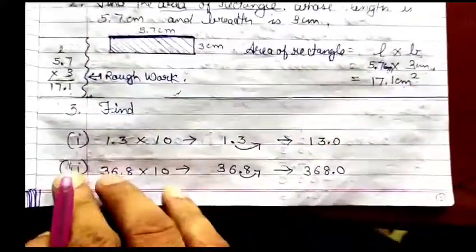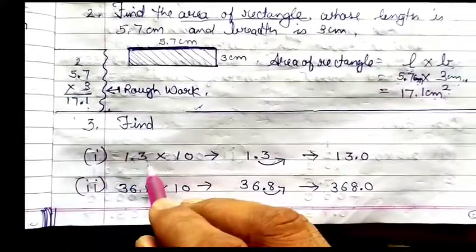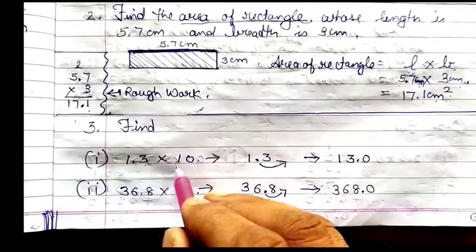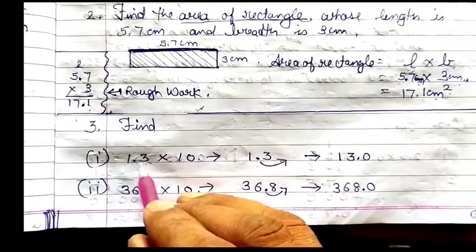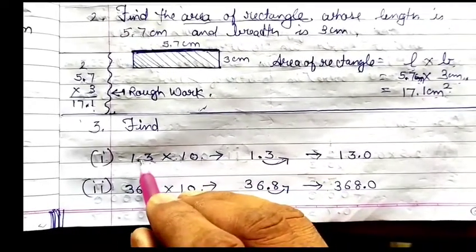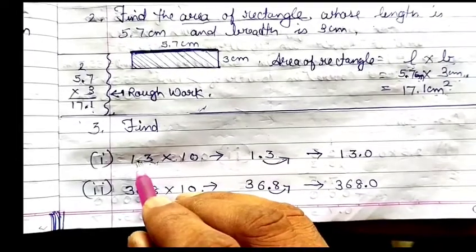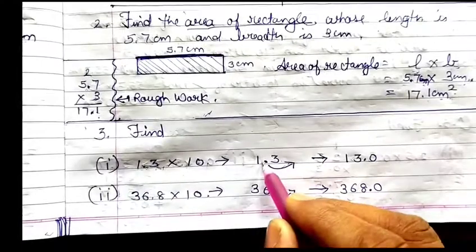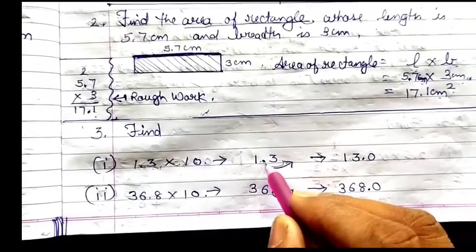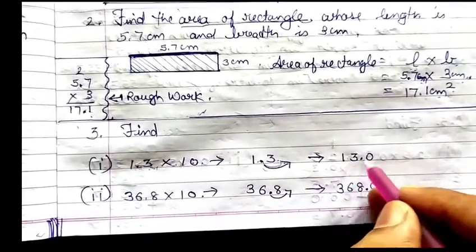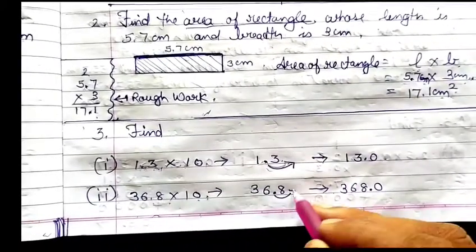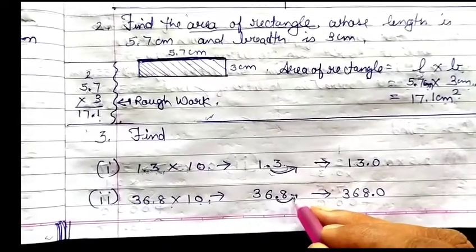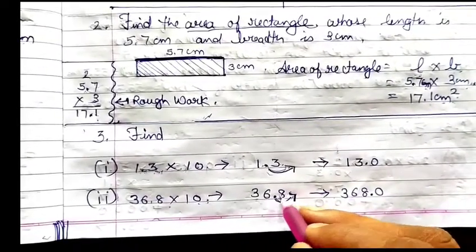Question number 3: everywhere we multiply by 10. While multiplying by 10, move the decimal one digit toward the right. So 1.3 multiplied by 10 becomes 13.0. Then 36.8 into 10 — move the decimal one place to the right — it becomes 368.0.